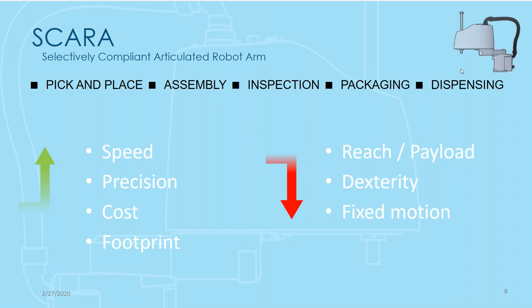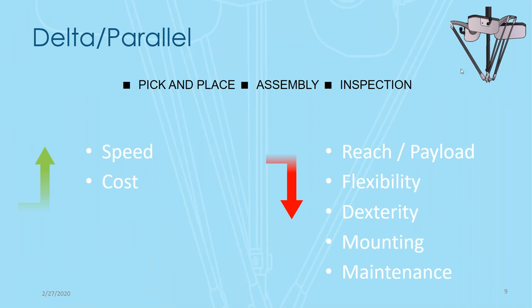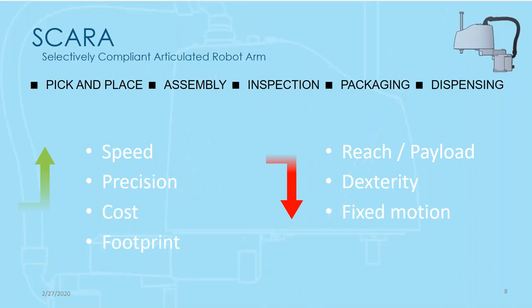SCARA robots are great for applications like screw driving and pick-and-place, with rapid movement in the X and Y plane and a rigid vertical Z-axis. They have a fixed motion path, but that's well-suited for those types of applications. Raminder adds that they're well-suited for screw driving and pick-and-place, and we'll get into those applications in more detail later.